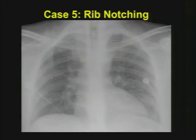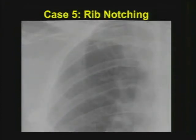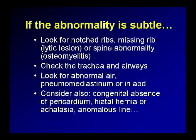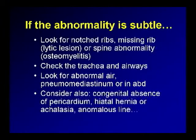Case number five, the eye poke: this is a case of rib notching. We can see that there are notches under these ribs. Sometimes you'll have a cardiac history that comes with this patient. This is a person with severe collateral flow due to a severe coarctation. You can see the large epigastric arteries and intercostal arteries that have developed to circulate flow around the area of stenosis. If the abnormality is subtle and they say this patient is sick, look for the notched ribs. Look for missing ribs — a classic thing to overlook is a rib with a lytic lesion from metastatic disease that you don't see because those are very subtle.